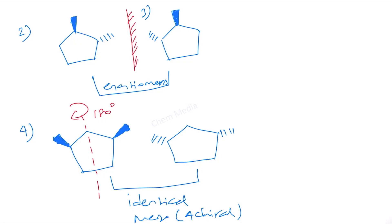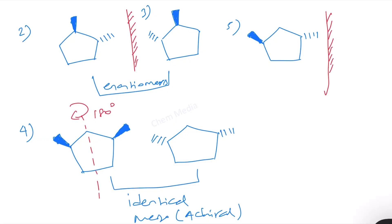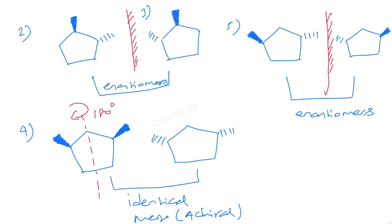Now let's put one methyl group up and one methyl group down for the 1,3 case — this is isomer number five. Once again we will get a pair of enantiomers. With the mirror plane drawn, this would be the mirror image; these two are non-superimposable, therefore they are enantiomers. So this must be considered as two isomers.